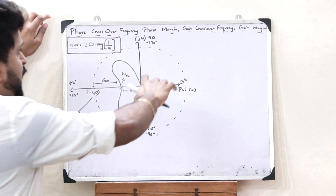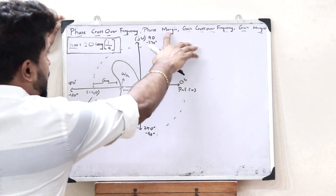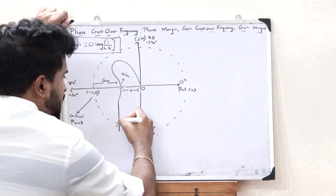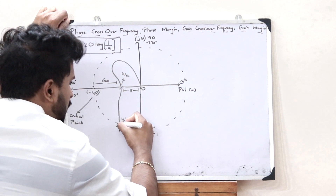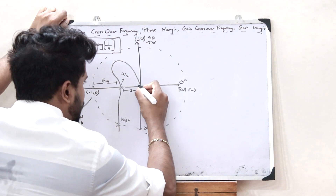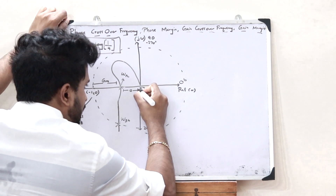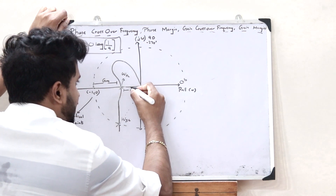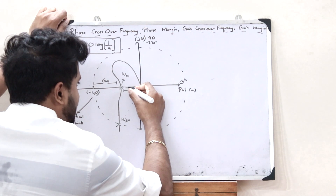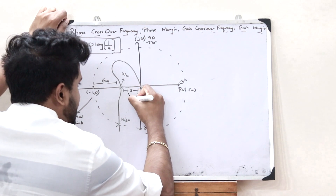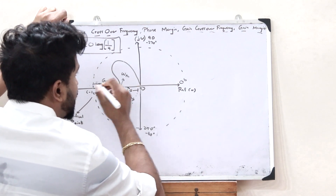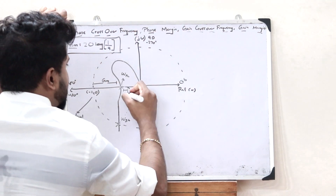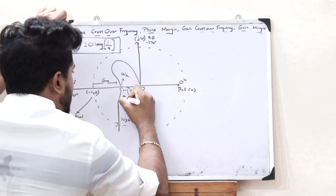Next, we have to find the phase margin. In order to find the phase margin, we extend this point towards the origin and draw a line from the origin. We then obtain an angle here. This particular angle is the phase margin, PM.